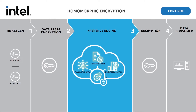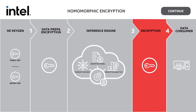HE preserves privacy by keeping the input data, model, and intermediate values encrypted at all times. Inference results are decrypted using the secret key, ready for consumption by users of the secure home credit default risk prediction service.